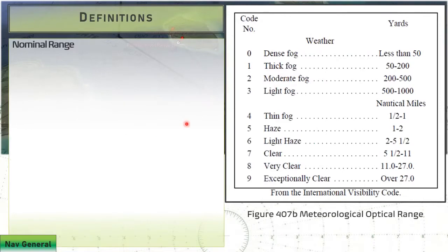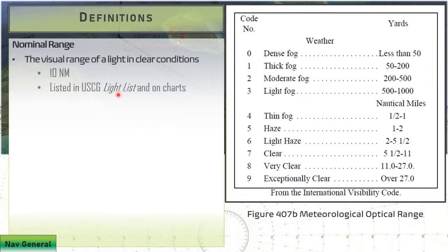Nominal range of the light is the baseline we're talking about. The range we get from the chart and the light list, that's the nominal range. This is your starting off point and it's based on 10 nautical miles of visibility.